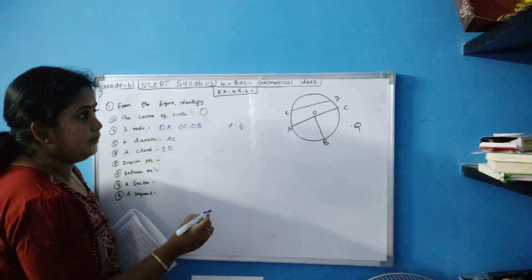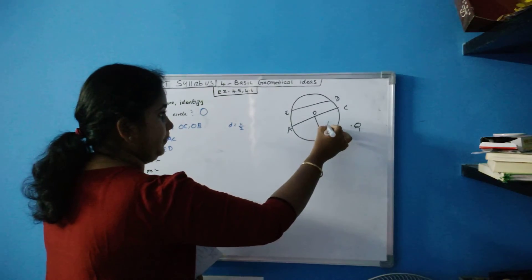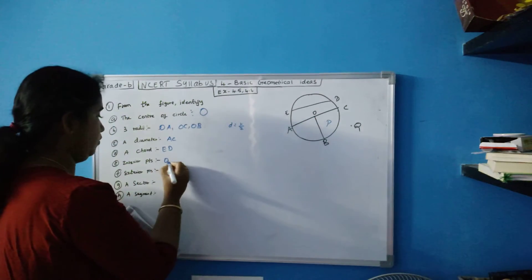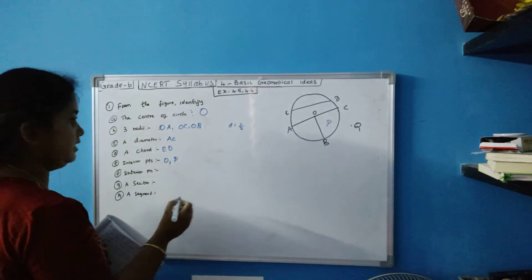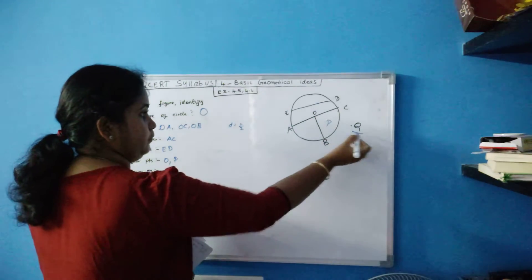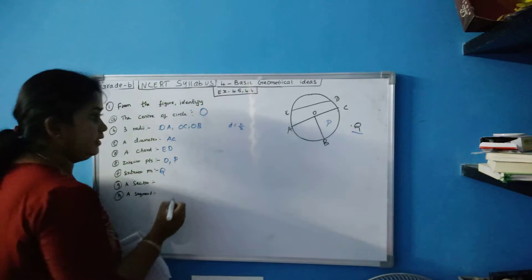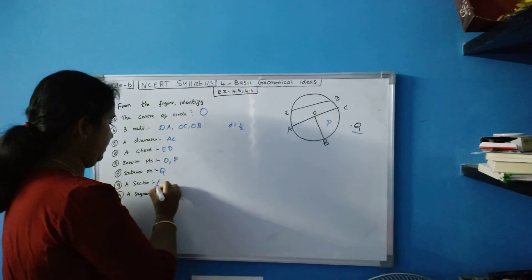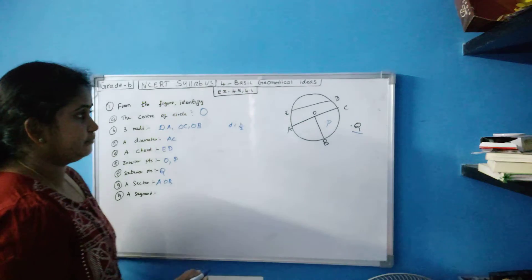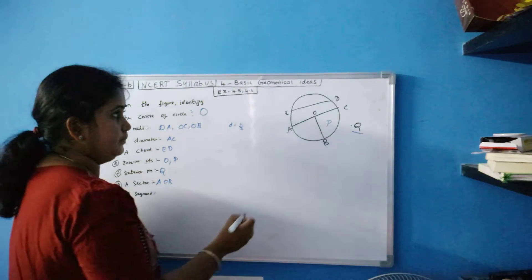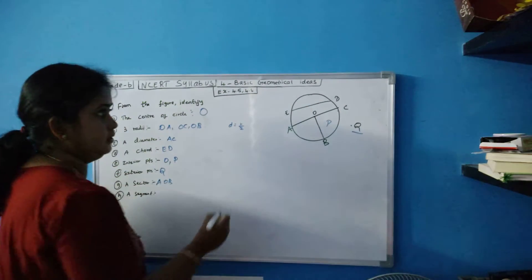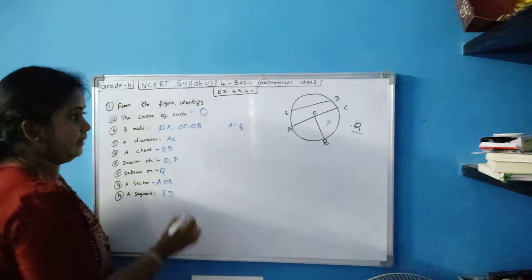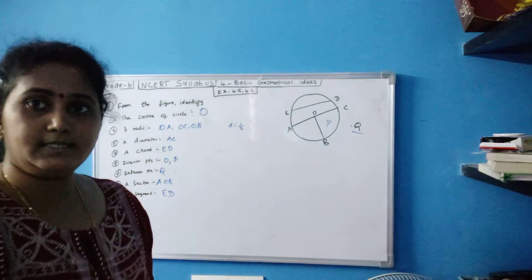Next, interior points: point O and point P — O and P are your interior points. Exterior points: you see only point Q is exterior, so it is Q. A sector: AOB is a sector. A segment: ED is a segment.